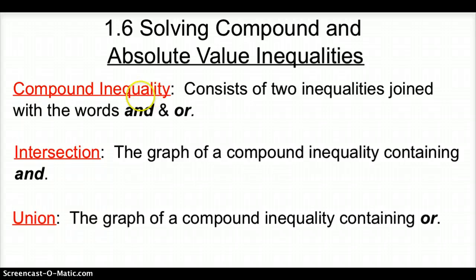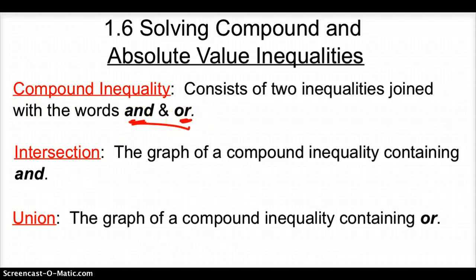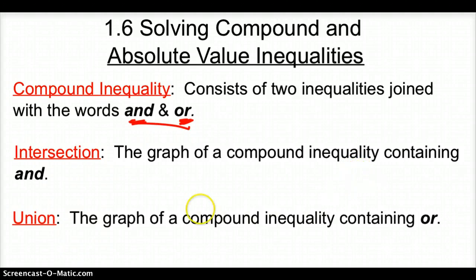First, we need some vocab words. We're going to start off with a compound inequality — it consists of two inequalities joined by the words 'and' or 'or.' An intersection is a graph of the compound inequality containing the word 'and,' and the union is the graph of a compound inequality containing the word 'or.' So 'or' is union, and 'and' is intersection.